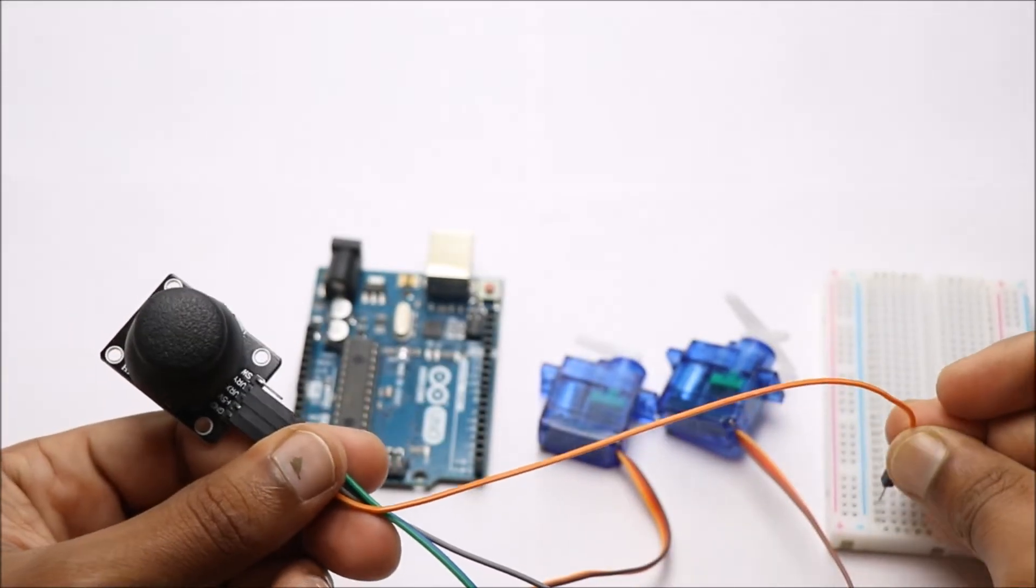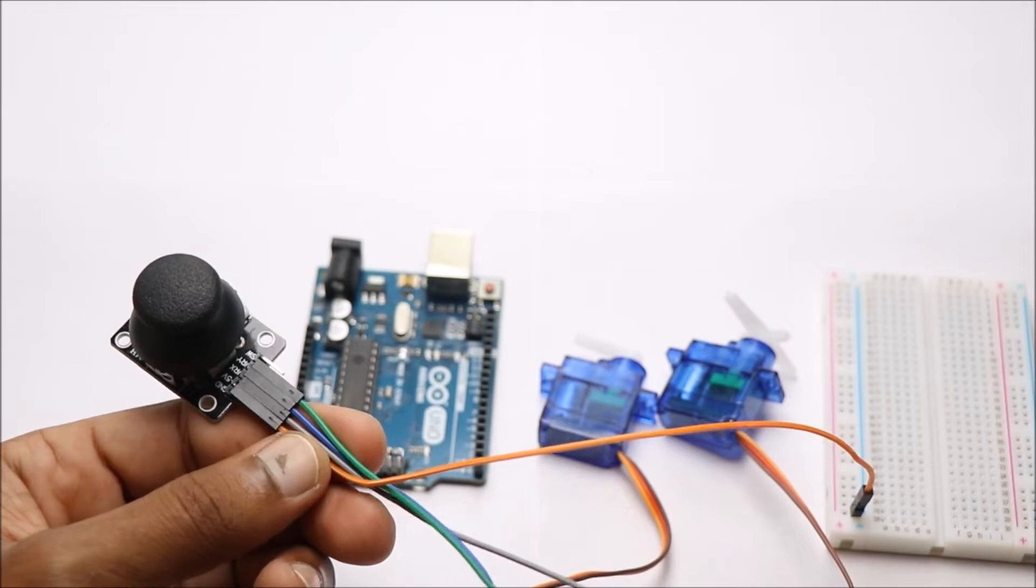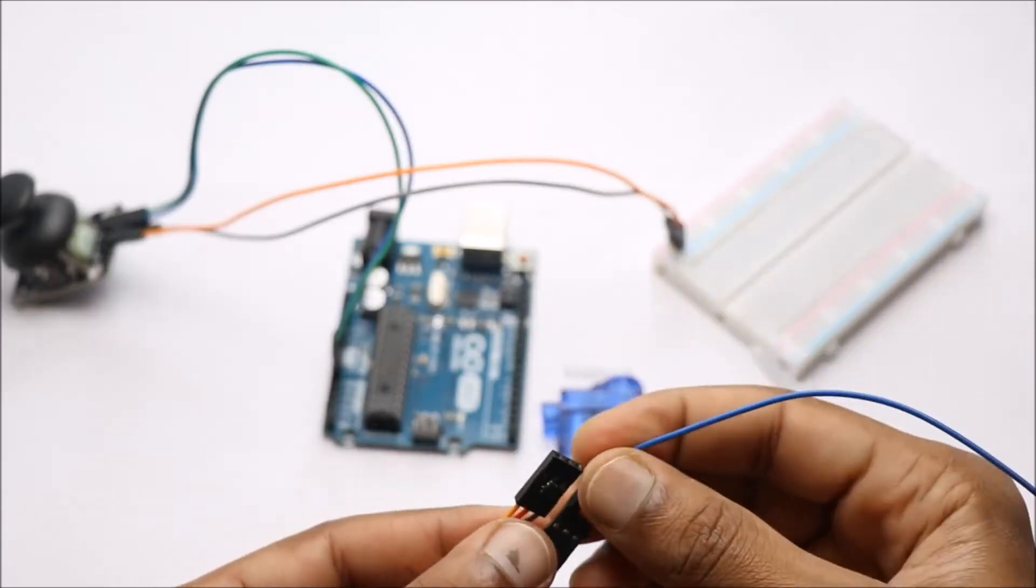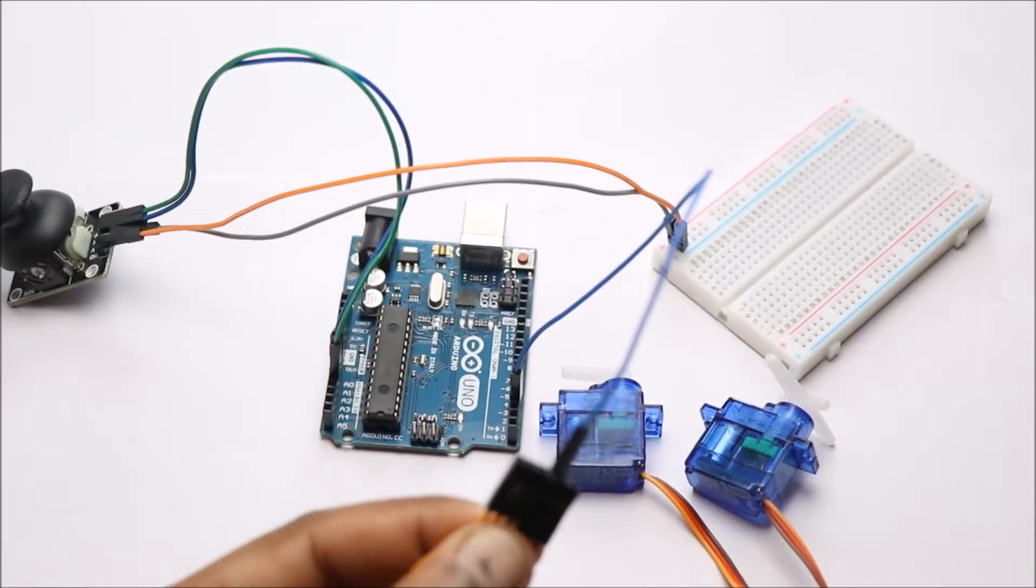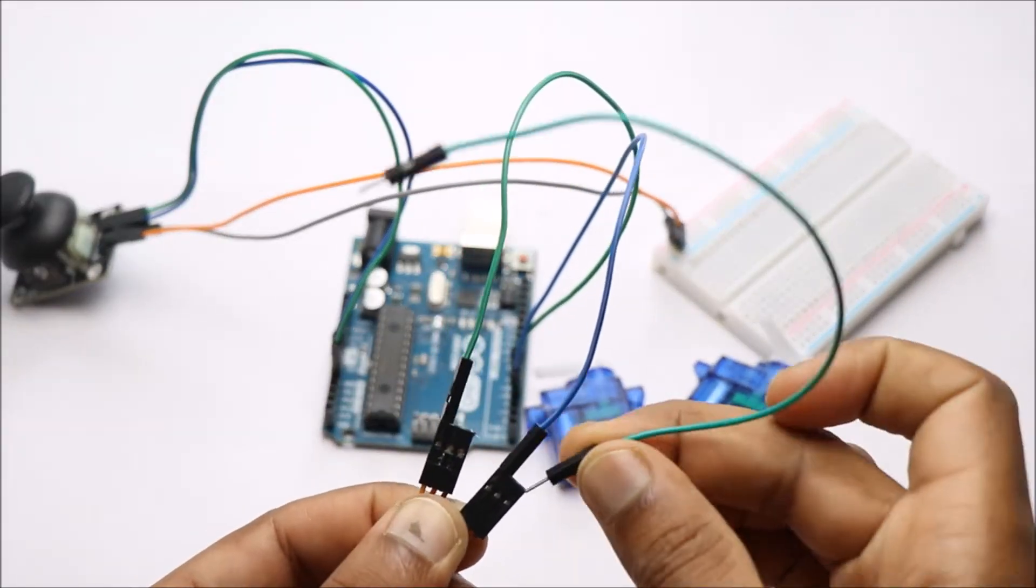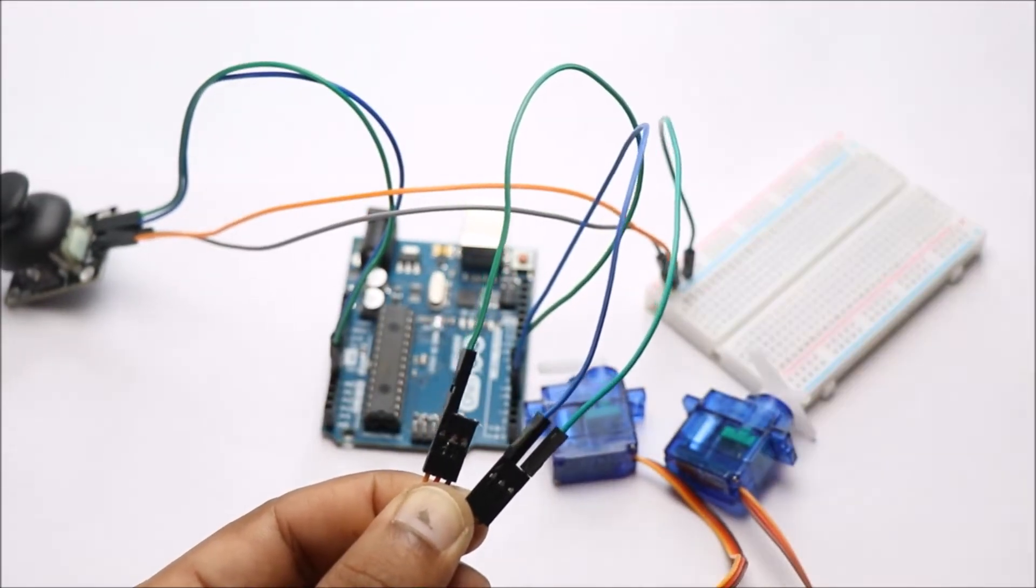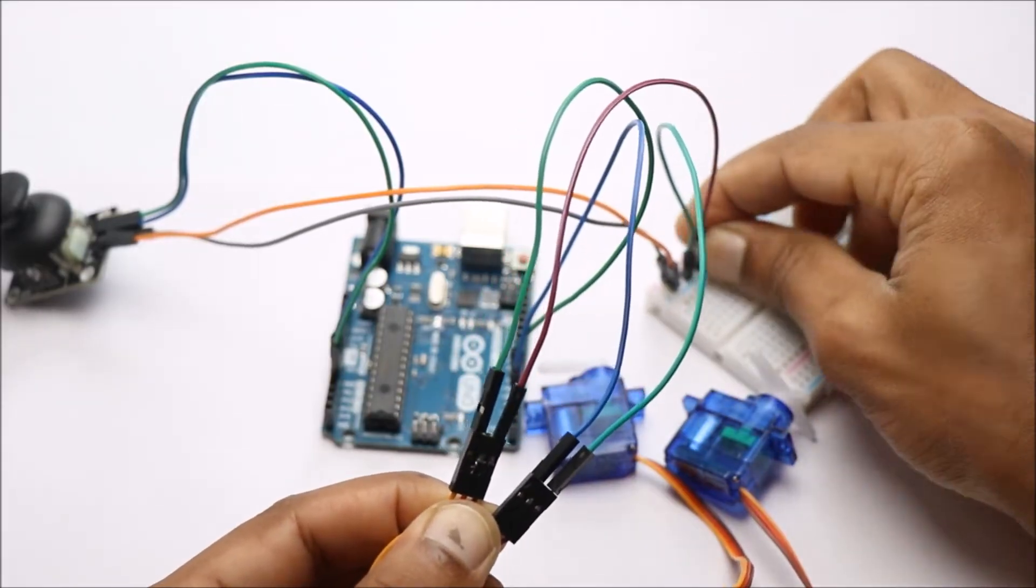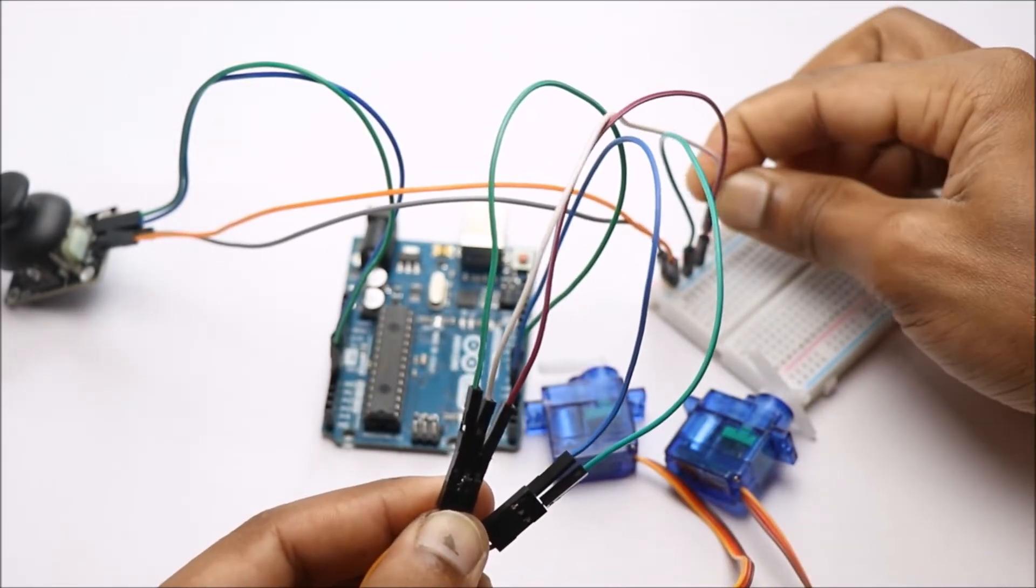Pin X from the joystick module will go to A0, while Y goes to A1 of the Uno. Signal pins of the micro servos will go to digital pins D3 and D5 on the Uno board. For more details about the circuit diagram, please check out the description below.